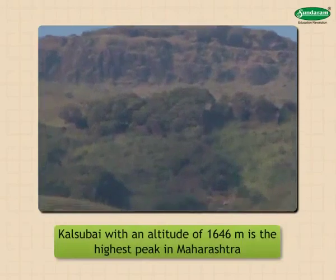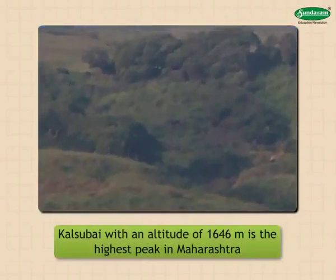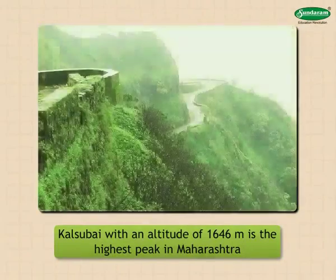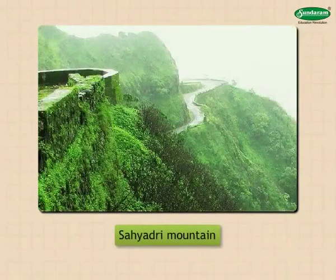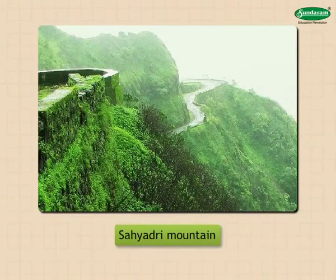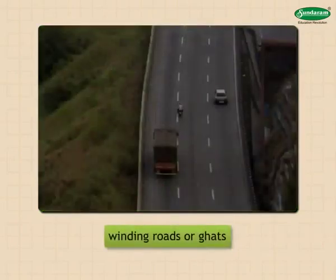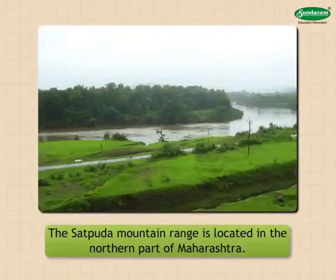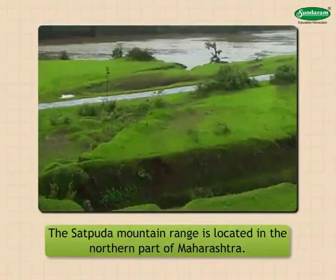Kalsubai, with an altitude of 1646 meters, is the highest peak in Maharashtra. The major rivers of Konkan and the plateau region have their sources in the Sahyadri mountains. While traveling to and fro from the plateau region to the Konkan, one has to cross the Sahyadri mountains. To facilitate this, winding roads or ghats have been constructed in these mountains.